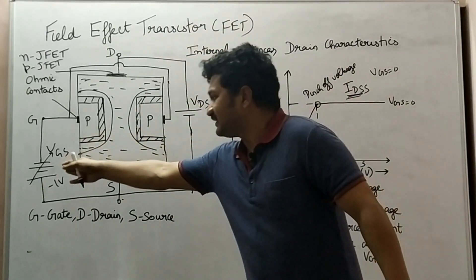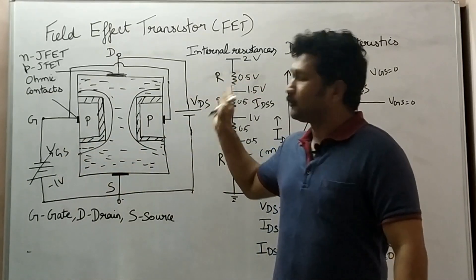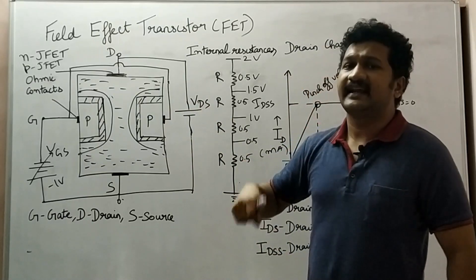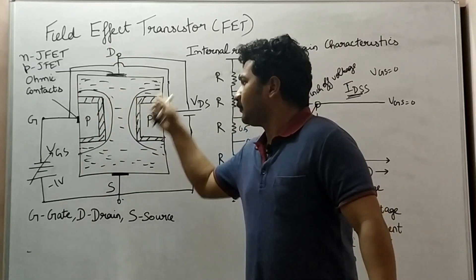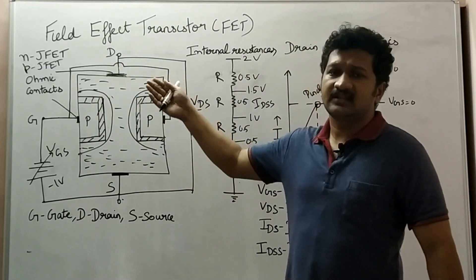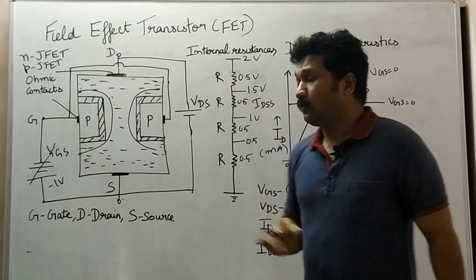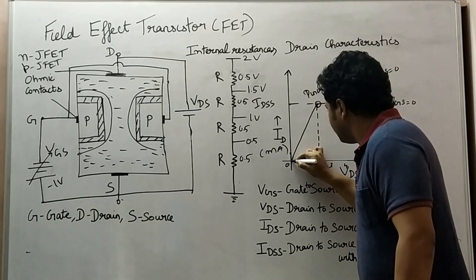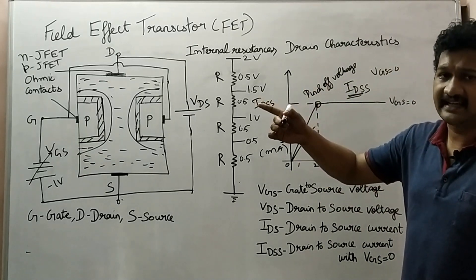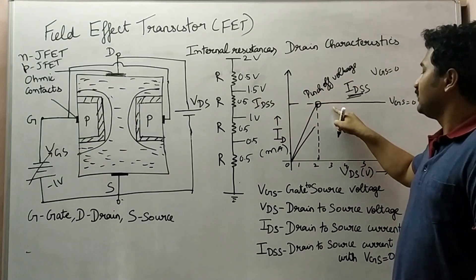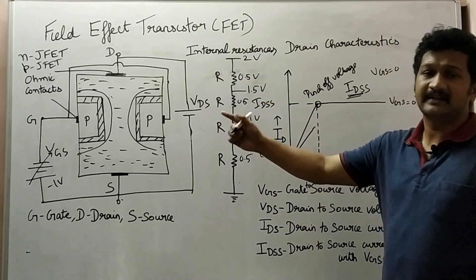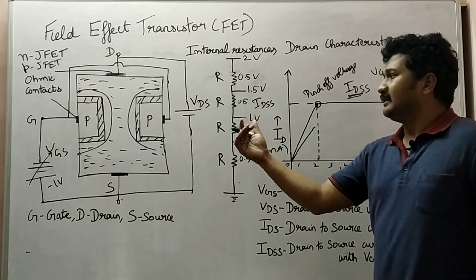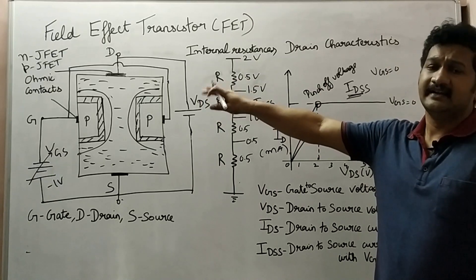In the previous case, VGS was zero and the full responsibility was taken by VDS alone — both to attract the electrons and to close the depletion layer to attain the pinch-off point. Now VGS also takes a role by applying some negative potential, causing some closure of the depletion layer, and further closure to attain the pinch-off voltage is taken care of by VDS. The level of VDS applied will be comparatively less.